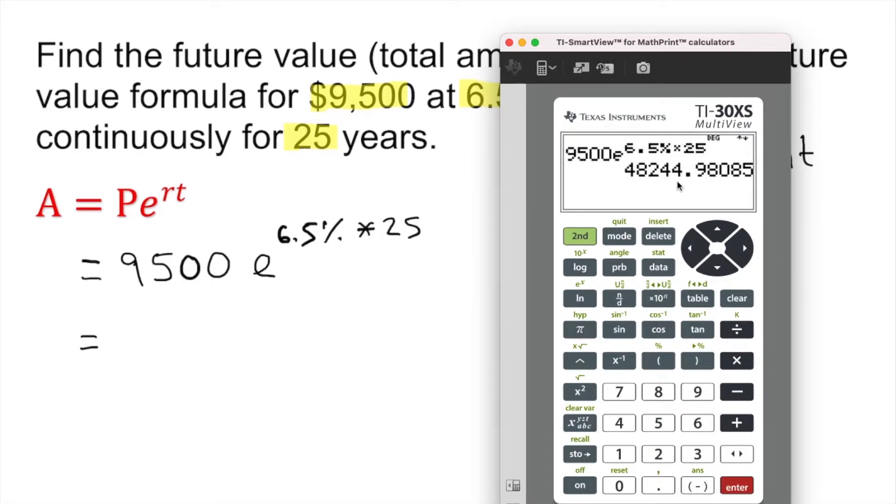That is the answer. Remember, we must round it up. Seems like that digit is zero, so it's going to stay as 98. So we have $48,244.98.